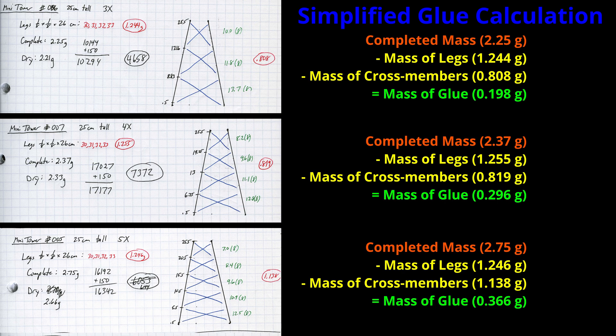This is also a good way to see if you're being consistent with your glue application from build to build. It looks like I was a little better with the five layer build, only adding an additional 0.07 grams.